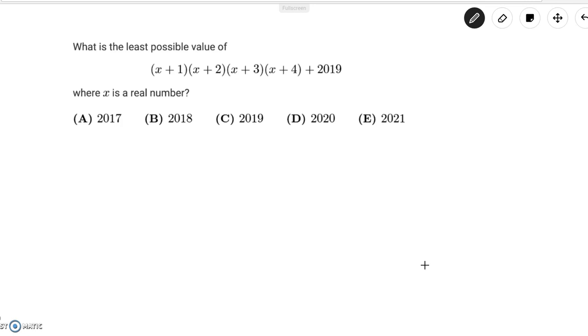Normally when we're given an expression to minimize on the AMC, we usually want to transform it into a quadratic, or if it's already a quadratic, use the methods we know to solve for the minimum or maximum in order to optimize our expression.